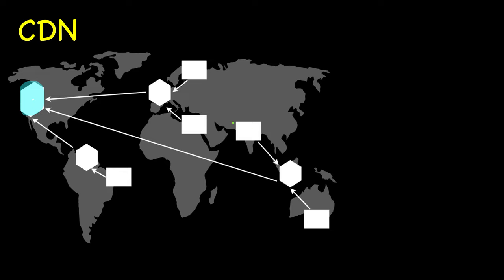If all the requests are coming to your main server, then this server will have a huge load since the number of requests is very large. Also, requests coming from nearer parts will be served very quickly, but those coming from a long distance will experience some latency — it takes time for the request to reach the server and for the content to be returned. In such cases we use CDNs.